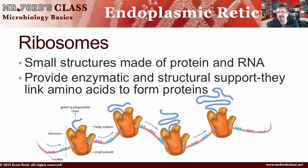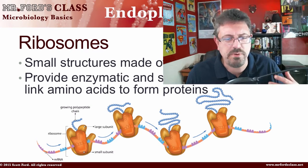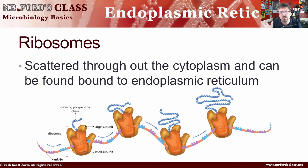Ribosomes are small structures made of protein and RNA. They provide enzymatic and structural support and link amino acids to form proteins. Basically, ribosomes are protein manufacturers — protein factories. So when you're taking a look at rough ER, it's rough because of the ribosomes. The ribosomes deal with proteins, and so you would expect the rough ER to deal with proteins. Ribosomes are not just on the ER — they're also scattered throughout the cytoplasm and can be found bound to the endoplasmic reticulum. You see ribosomes all around the cell, and of course on the rough ER.